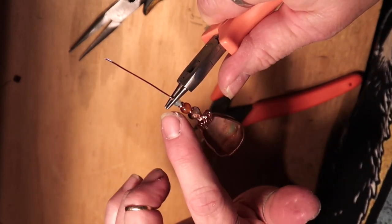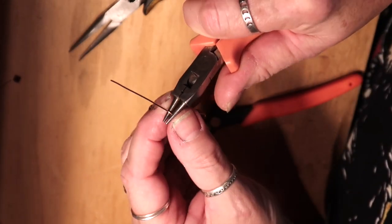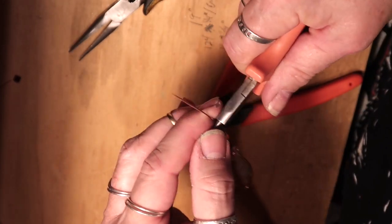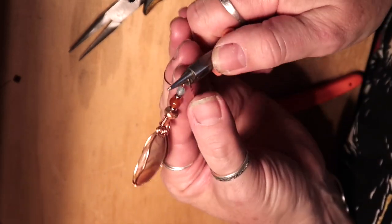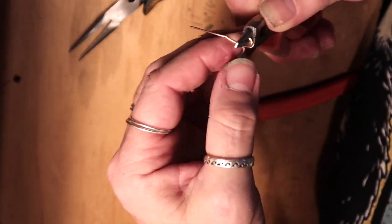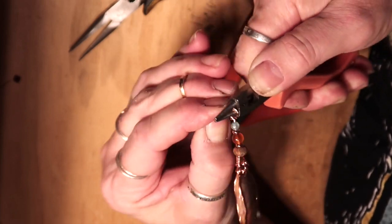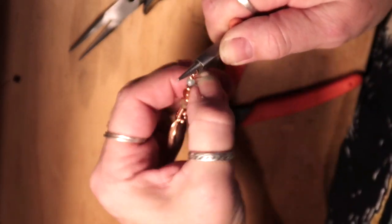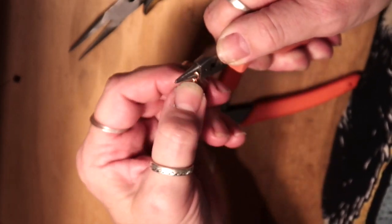So I'm going to use my chain nose pliers. And I'm just going to push that towards the back. I'm going to move it down the time so I have a nice big bail. Wrap that around. And then I'm going to take this wire and I'm going to wrap it around several times.